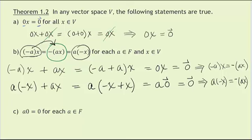The proof for part C I'll leave for you to do — it's really exactly the same proof as we did for part A. Just remember what's the scalar and what's the vector. In this case it's saying that a times the zero vector is equal to the zero vector, whereas part A said the scalar zero times any vector equals the zero vector.